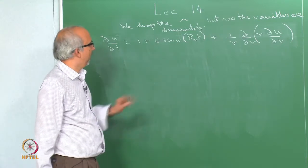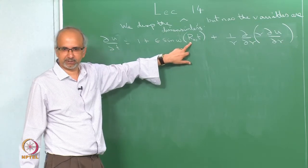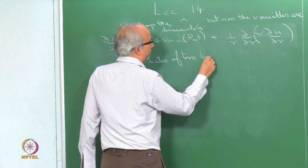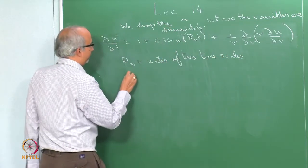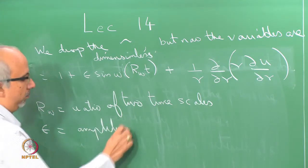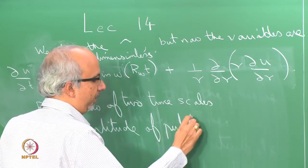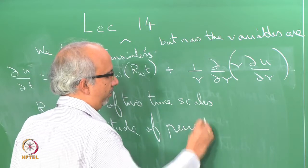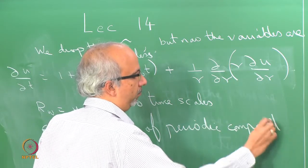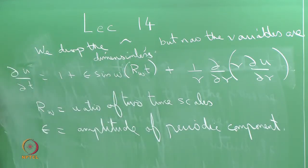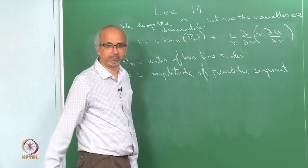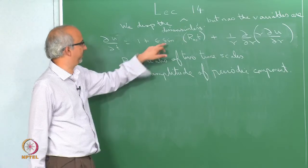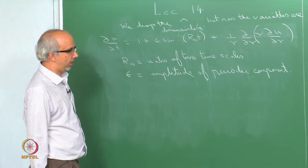There are two parameters: R_ω, the ratio of time scales, and epsilon, the amplitude of the perturbation of the periodic component. A student points out that in the argument of sin there should be no separate omega — it is just R_ω times t — and that is correct.